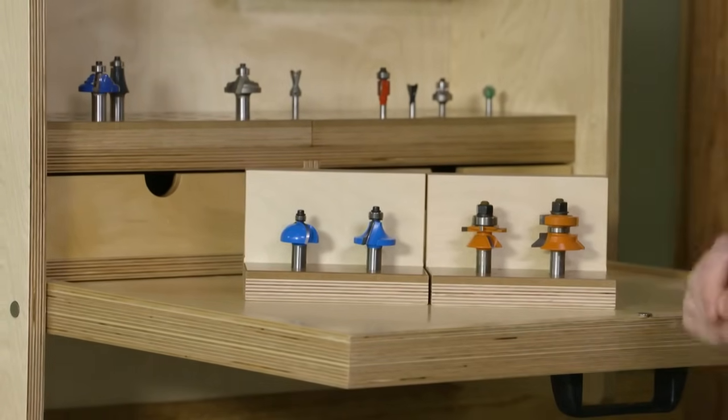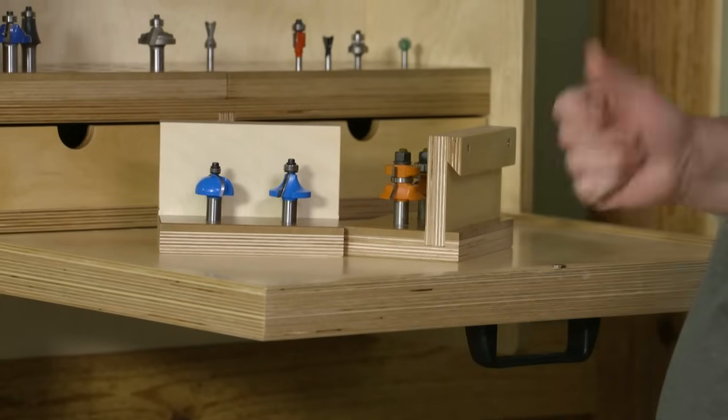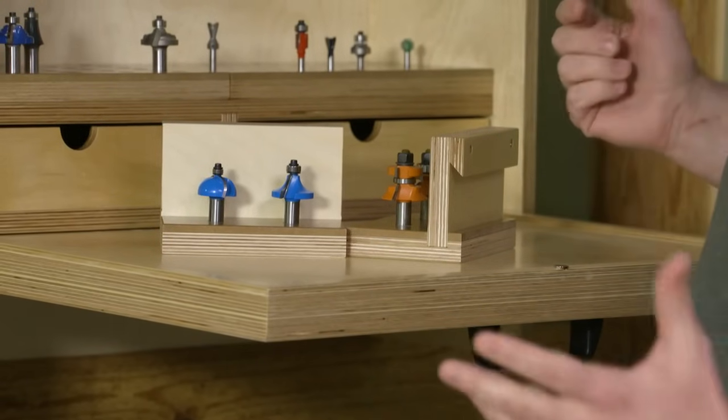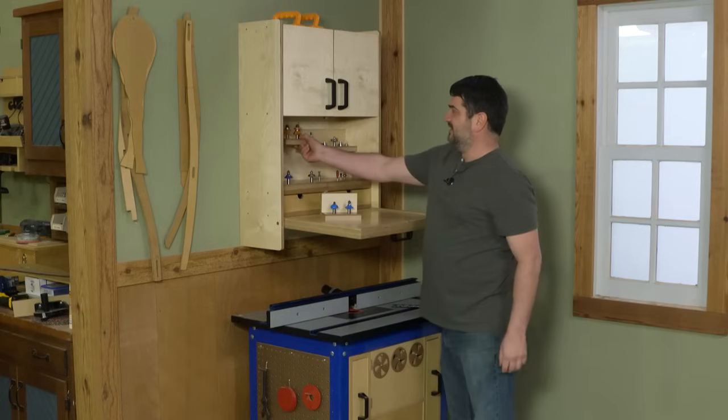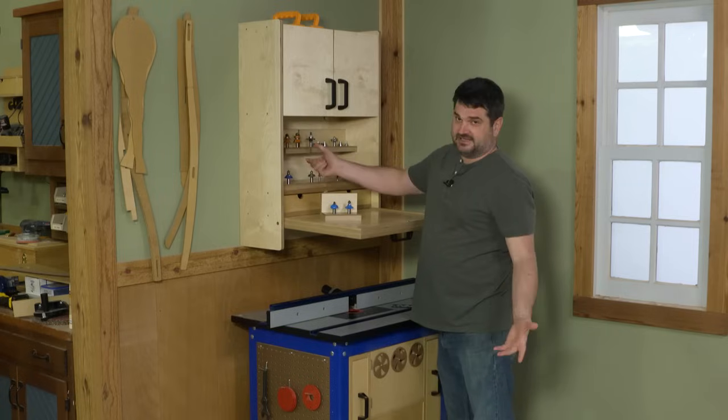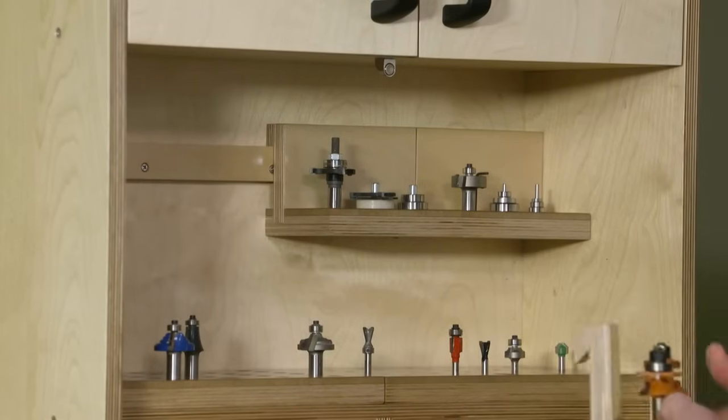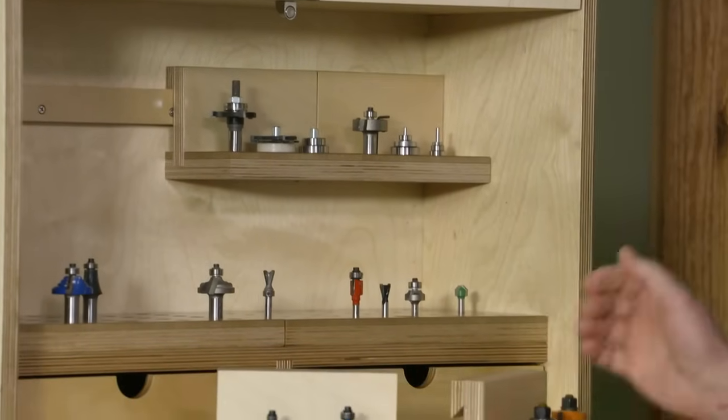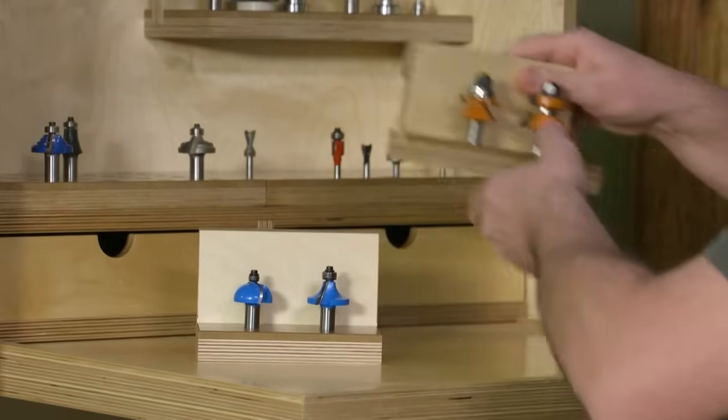So I made these little portable trays. They have a French cleat on the back—say what you want about the French, but the cleats, chef's kiss. It's got that cleat on the back so it can just hang right on the mating cleat in the back of the cabinet. So it's easy to grab those and take them with you either to the bench or onto the router table, or just work with them right here. Keeps those sets together.